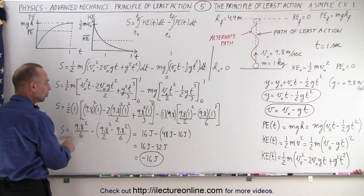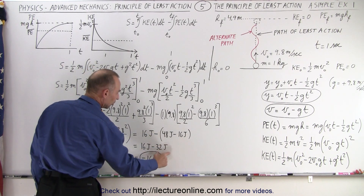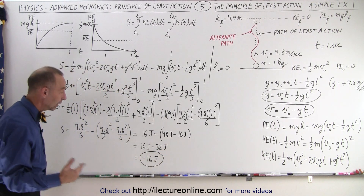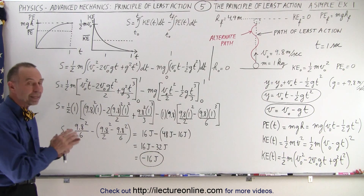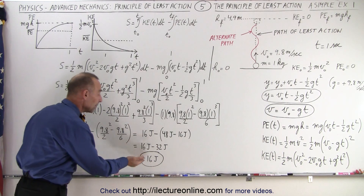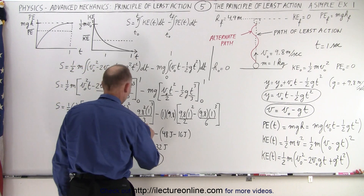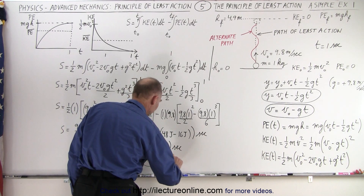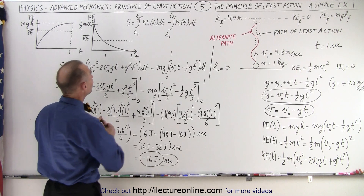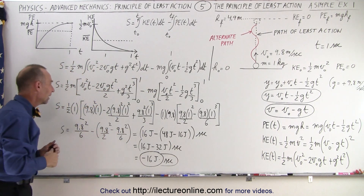When we simplify the numbers, S will be equal to 16 joules of kinetic energy minus 32 joules of potential energy, giving a difference of minus 16 joules. The action must be a minimum, and the minimum in this case is minus 16. To be strictly speaking, the units are joules times seconds, because we integrated over time and plugged in seconds, so we have to take that into account.